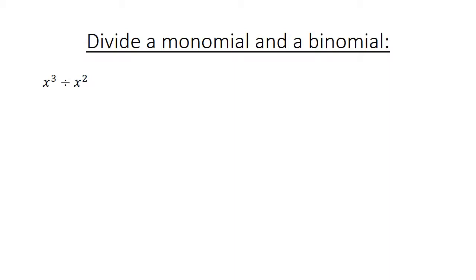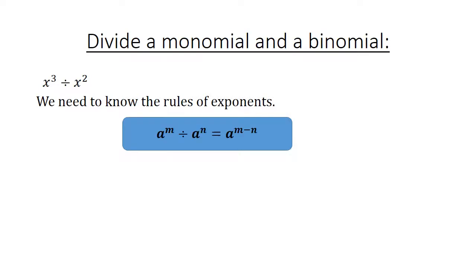Divide a monomial and the binomial. For example, x to the power of 3 divided by x to the power of 2. We need to know the rules of exponents: a to the power of m divided by a to the power of n equals a to the power of m minus n. So x³ divided by x² equals x to the power of 3 minus 2, which equals x to the power of 1, equals x.